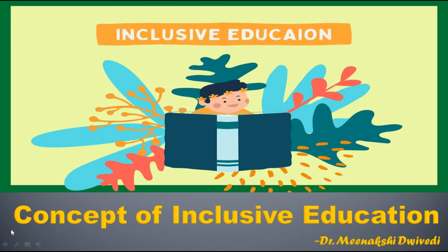Hello dear learners. Our Indian constitution envisages that every child has a fundamental right to education and must be given the opportunity to read and write. But at the same time, we know that every child does not carry the same caliber of learning. Every child has unique characteristics, interests and abilities, and thus their learning needs are also unique and should be respected. This gives the basis for the emergence of inclusive education.